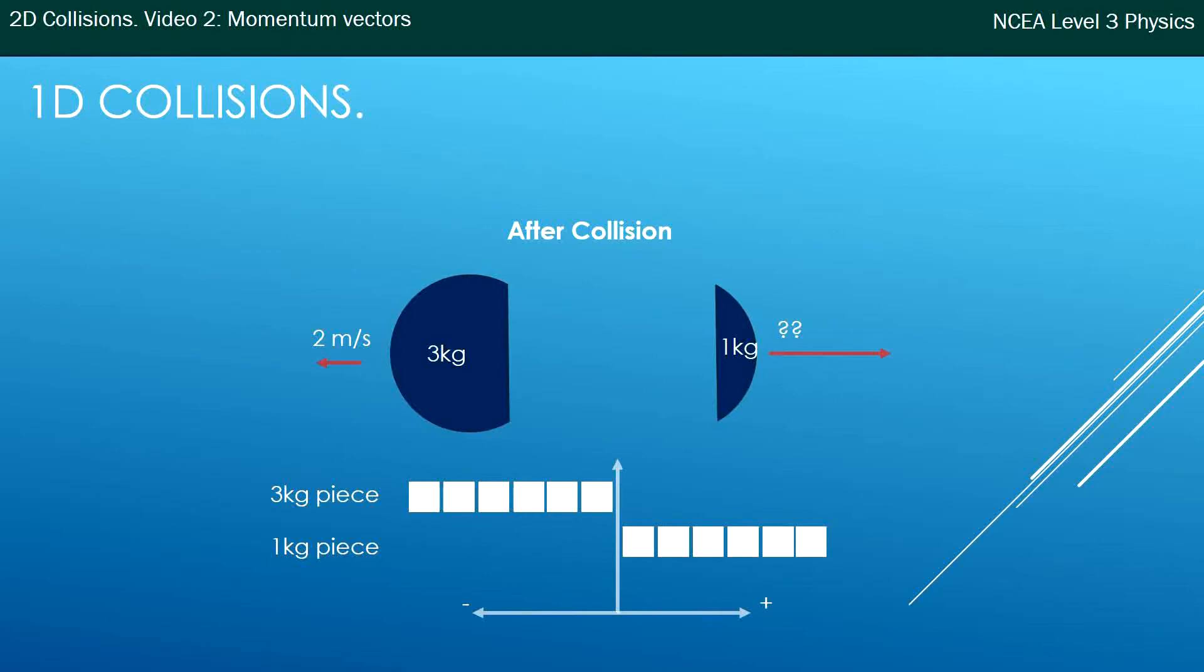So there's my same picture. I can make some calculations to work out its speed now. Six momentums, or six kilogram meters per second, equals mass times velocity, because that's what momentum is. I've got the mass of one kg, and I rearrange to find velocity of six meters a second. So that's what you would have been doing in level two.